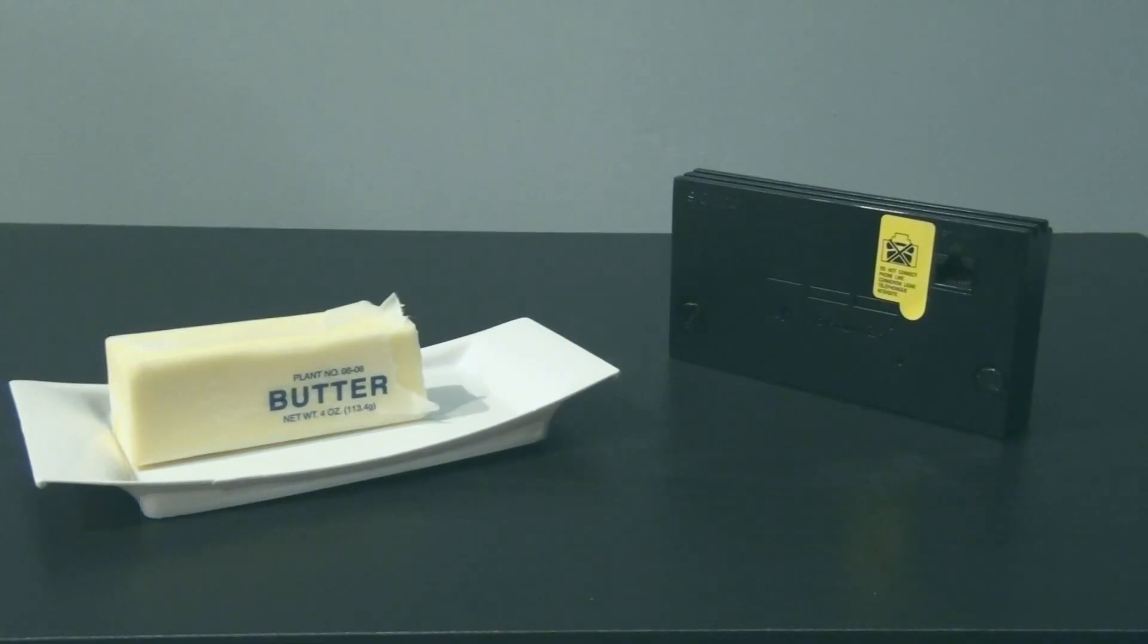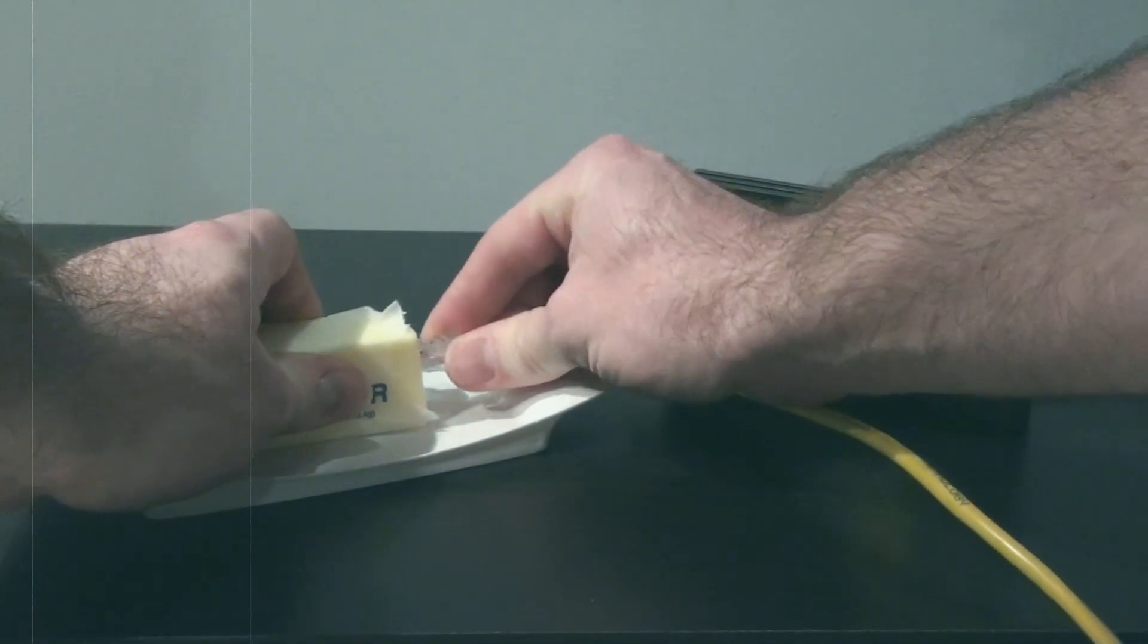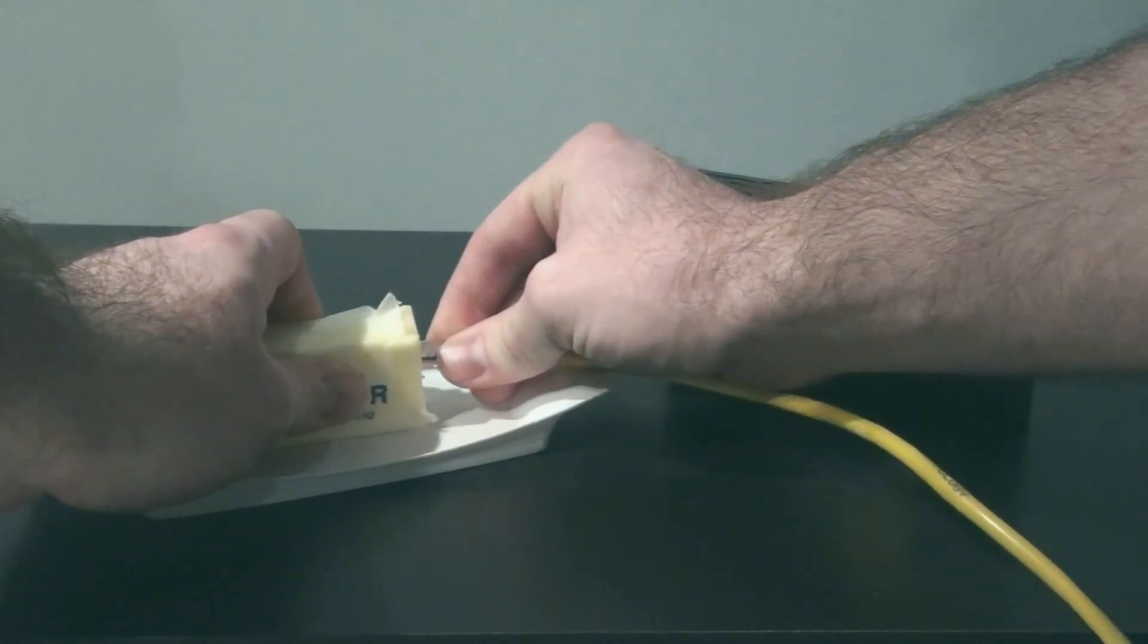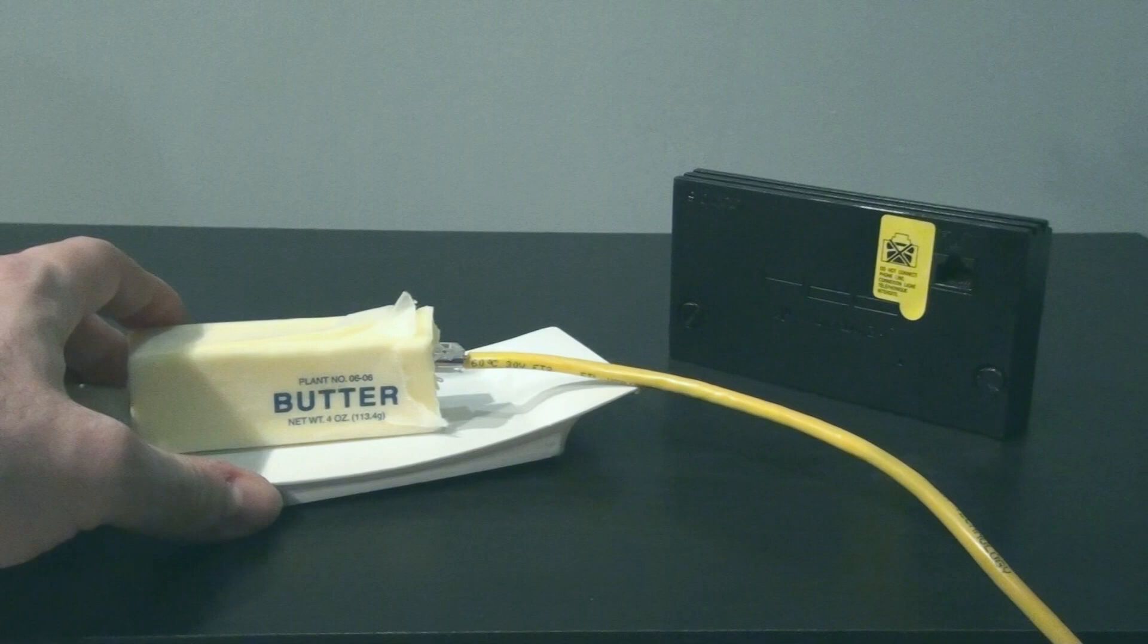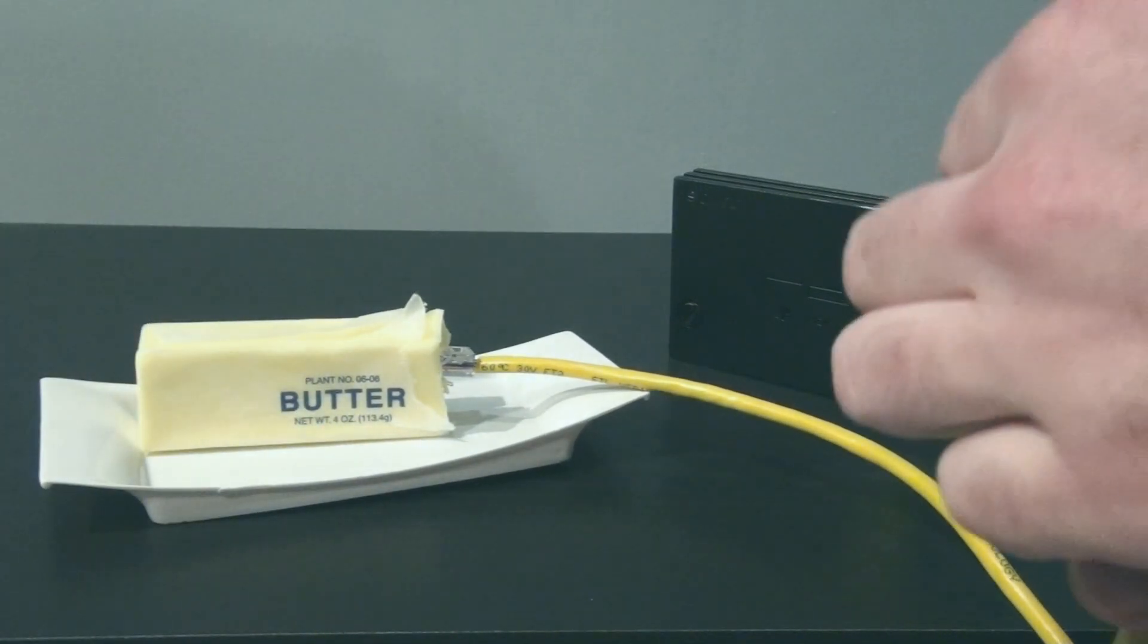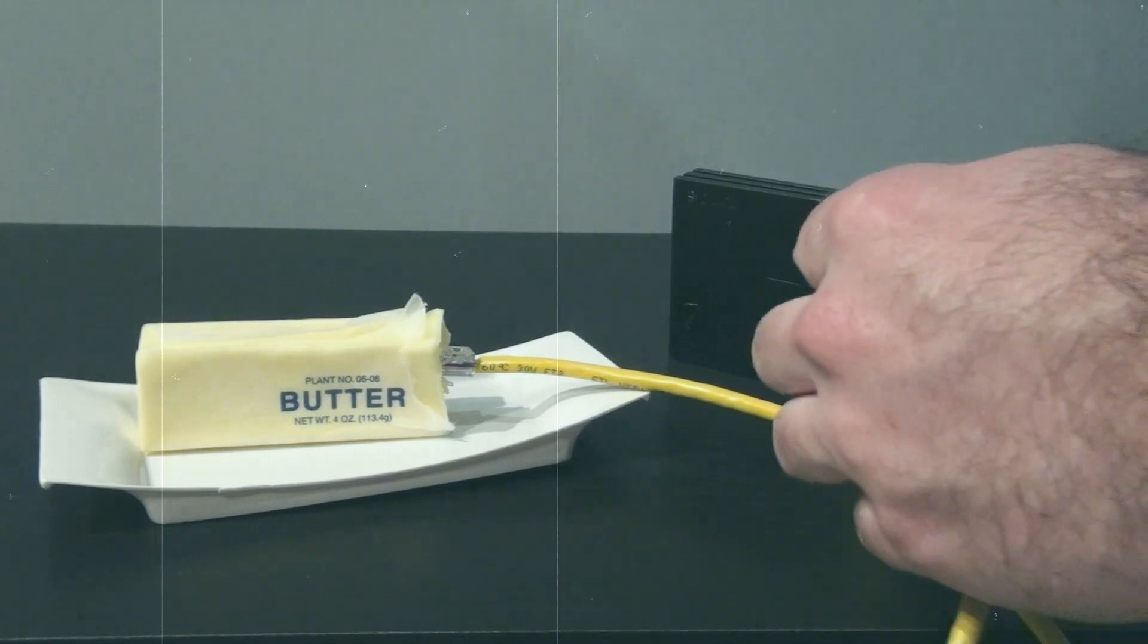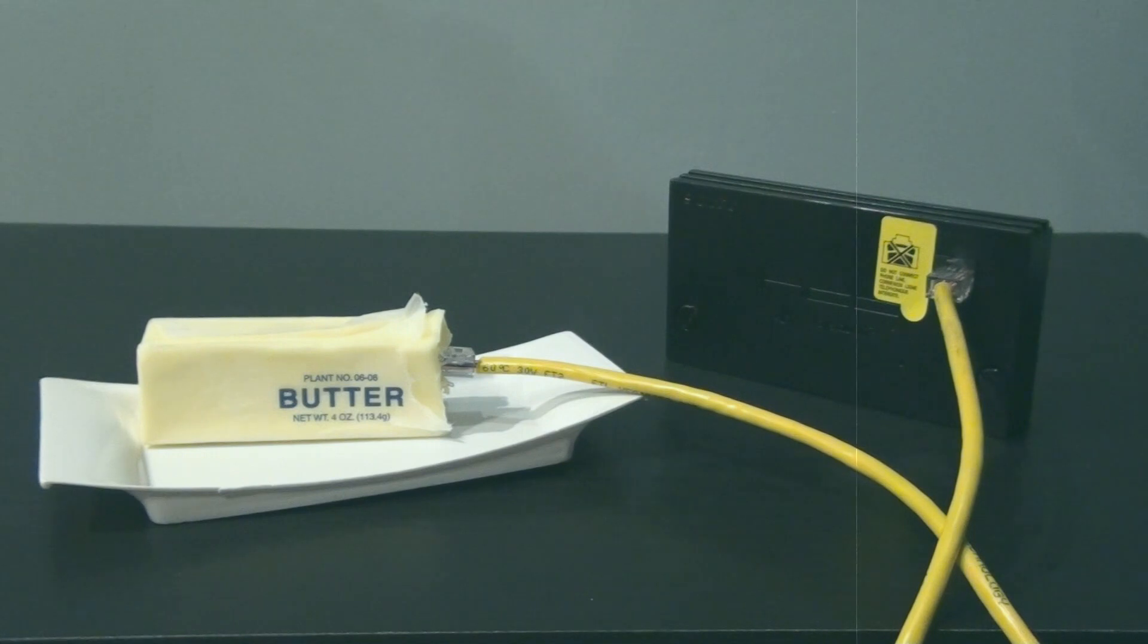Butter is a good source of internet. Place your ethernet cable into the stick of butter, and the other end into your PlayStation 2 network adapter. We have just created internets.